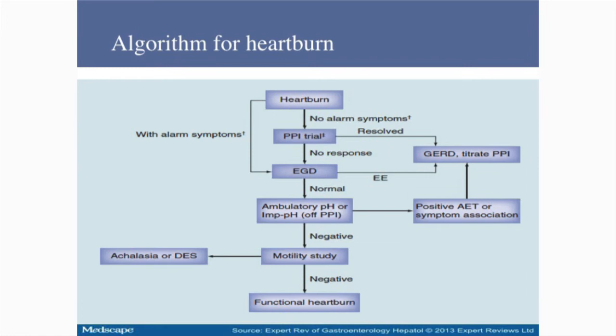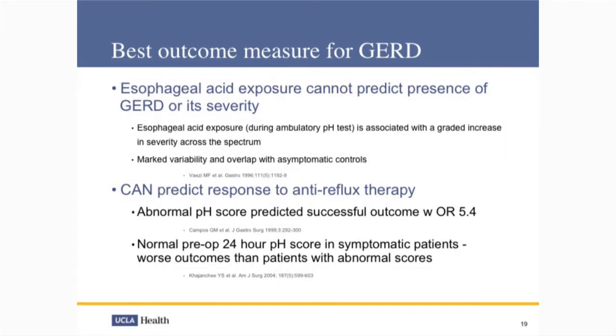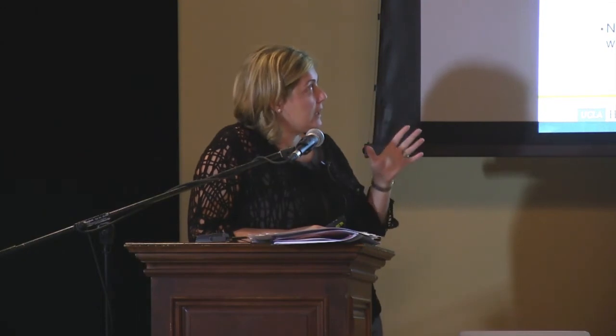We are looking for the best outcome measures for gastroesophageal reflux disease. Keep in mind that esophageal acid exposure cannot predict the presence of GERD — you can't tell patients based on these numbers that they're more predisposed to having Barrett's or erosive esophagitis. We do know there's some graded increase in severity — the higher the number, the greater the potential for symptoms and complications. But there's a lot of overlap with asymptomatic controls. What we do know about the 24 to 48-hour studies is they can predict response to anti-reflux therapy such as Nissen fundoplication.